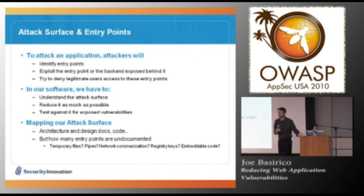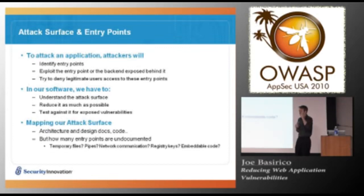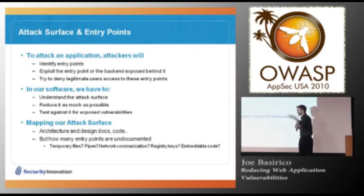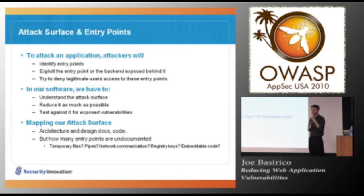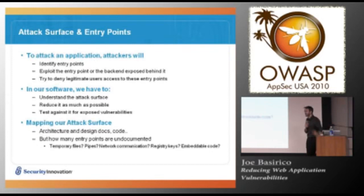Attackers look at our software in the same way. They look at it and say, 'If I were going to attack this system, these are the entry points I would use.' The interesting thing about attackers is that they know the system really well — they see you're using these protocols, these entry points, jQuery, JSON blobs, and they ask: how can I bypass your input validation, how can I manipulate your server-side information stores? They identify your entry points, exploit the entry point or the backend service behind it, and then try to gain access.